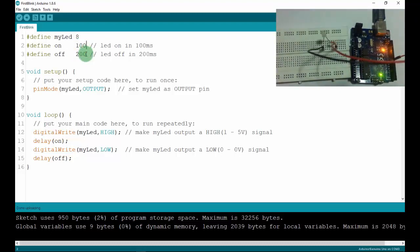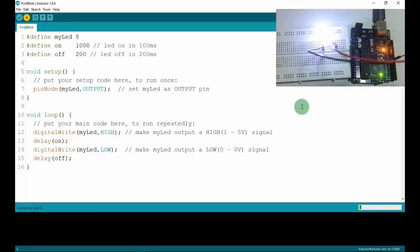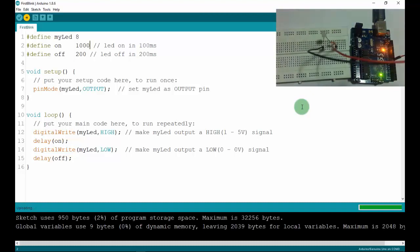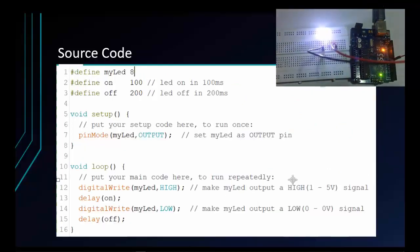Now I will change to 1000 and then I upload to the Arduino. As you see, it's blinking slower. That's the whole thing.